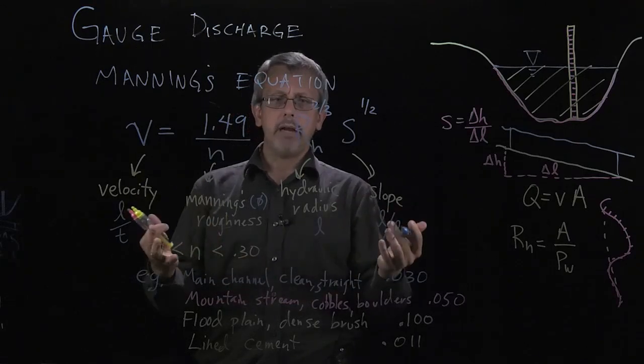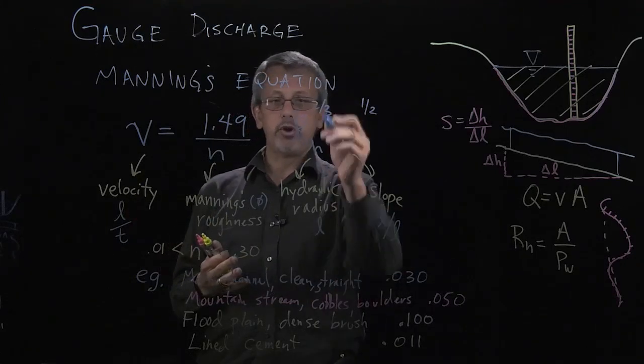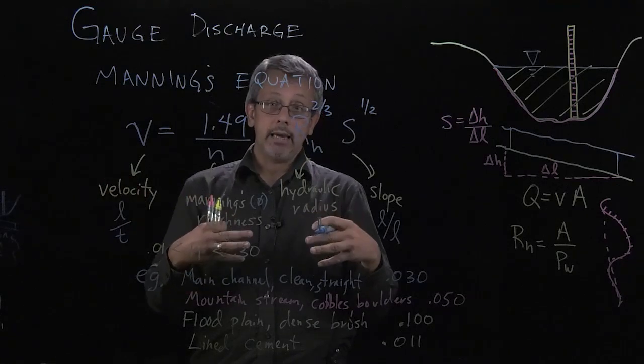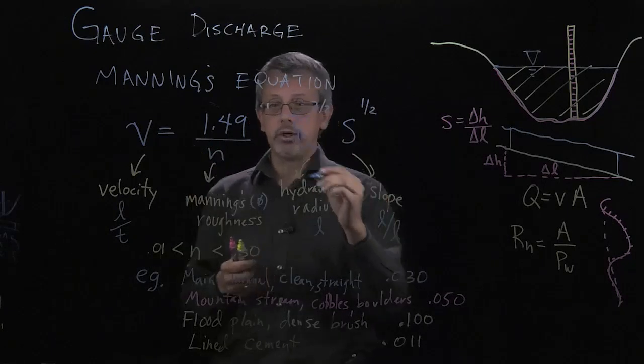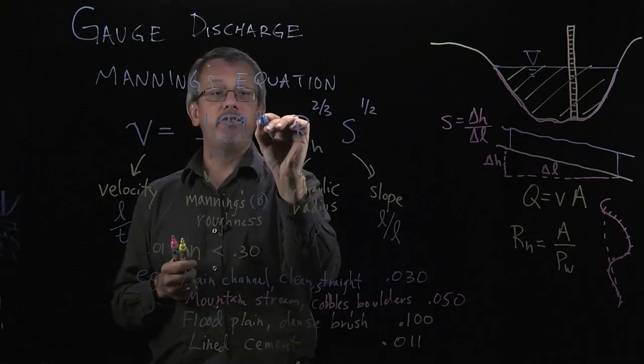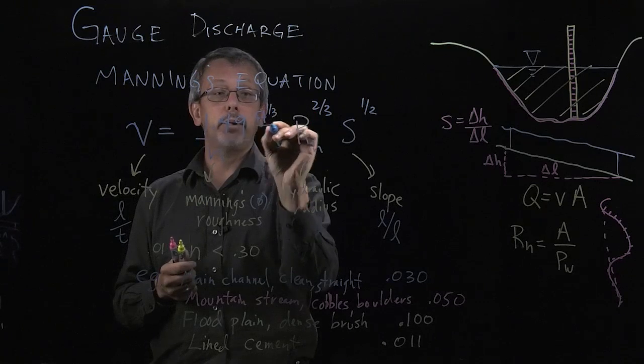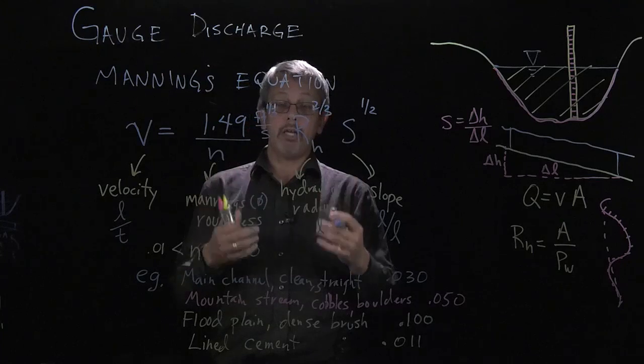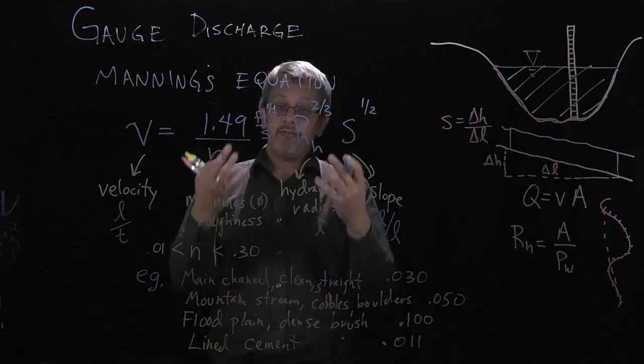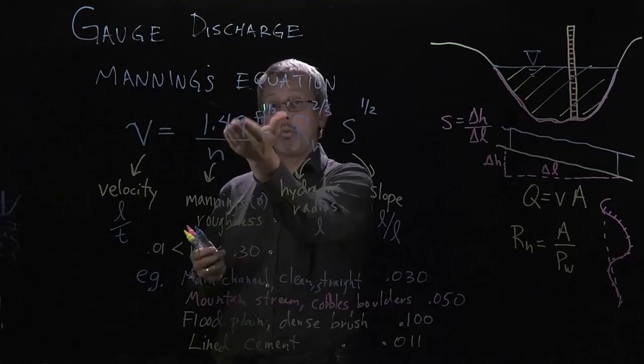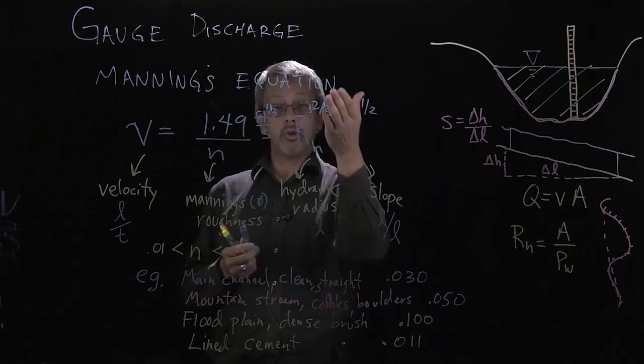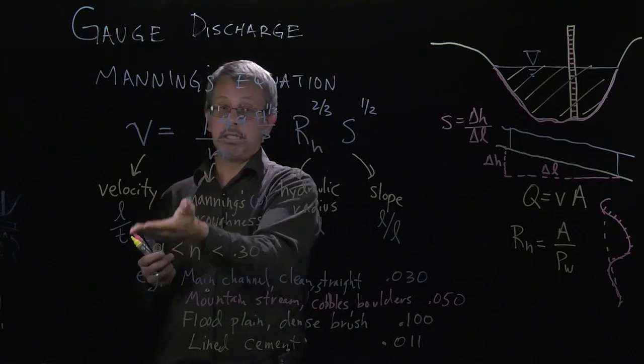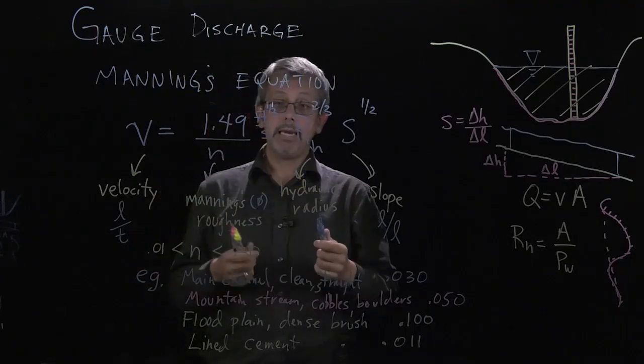However, these don't balance. If you look, we end up with length to the two-thirds has to be equal to length over time. So there's actually a set of units hidden in this equation. And I'm going to write this here that this is actually feet to the one-third per second. There are units that are assumed here that this 1.49 value corresponds with measurements in feet. That if you're going to use the number 1.49, you actually have to measure your radius in feet, and you will get an answer in feet per second.